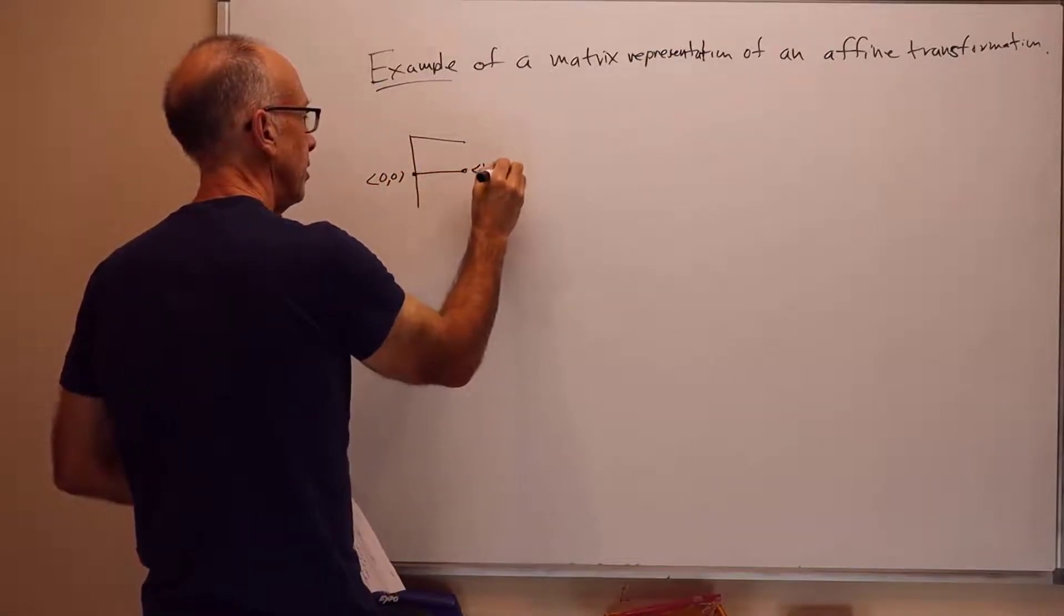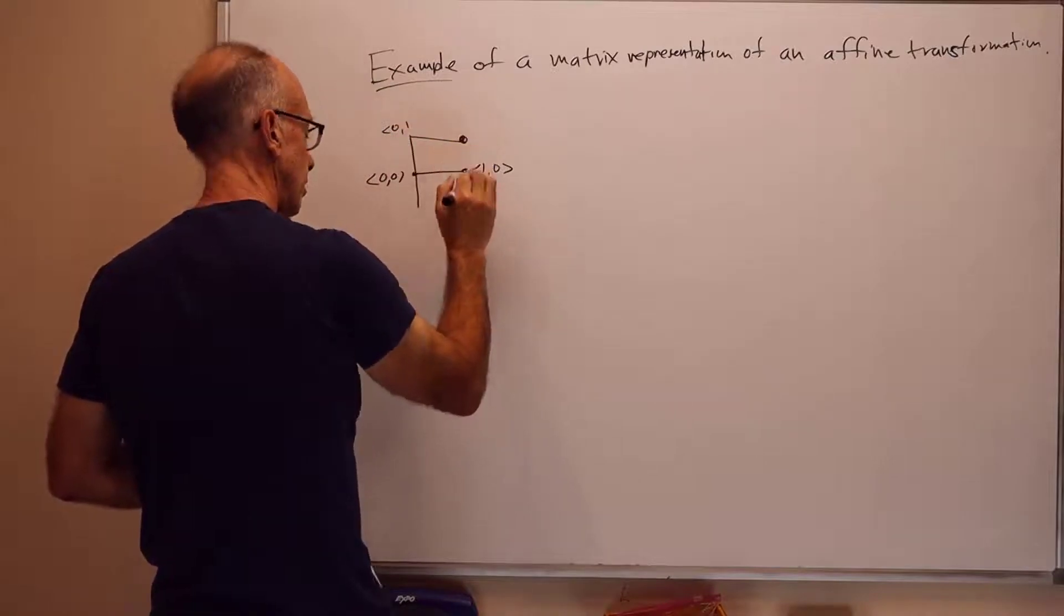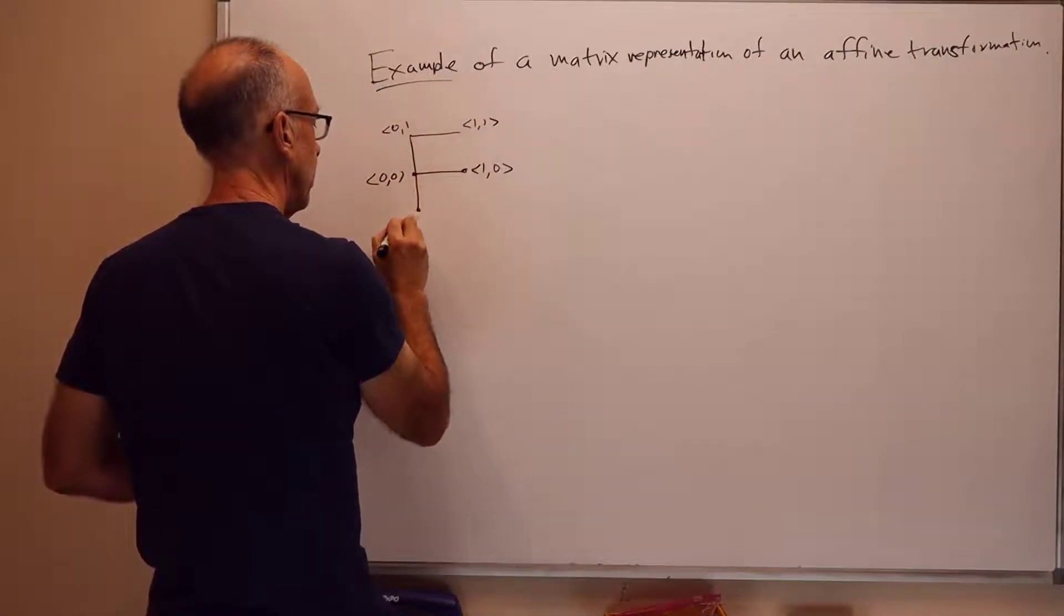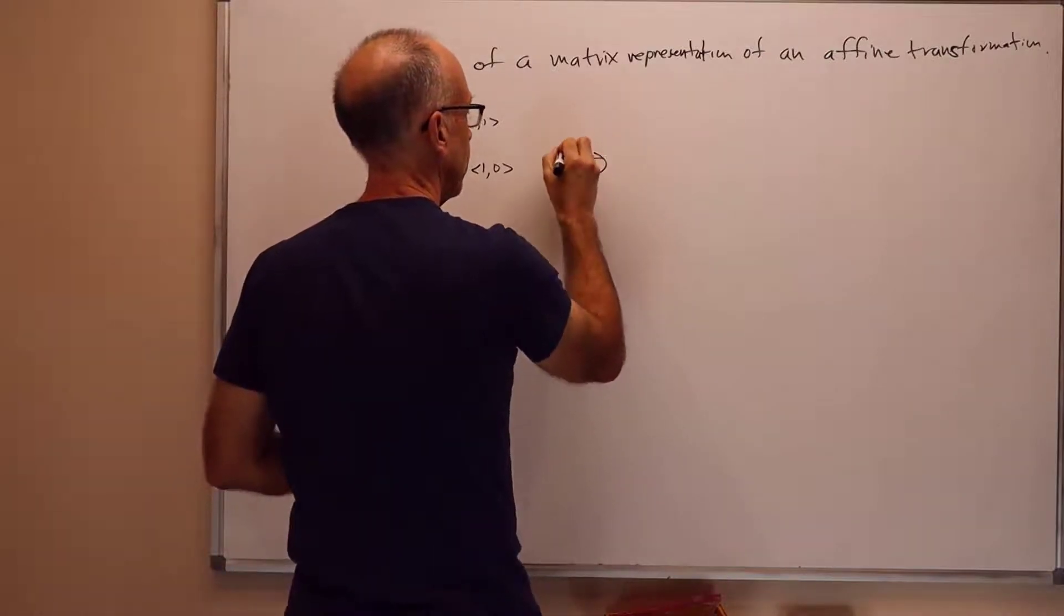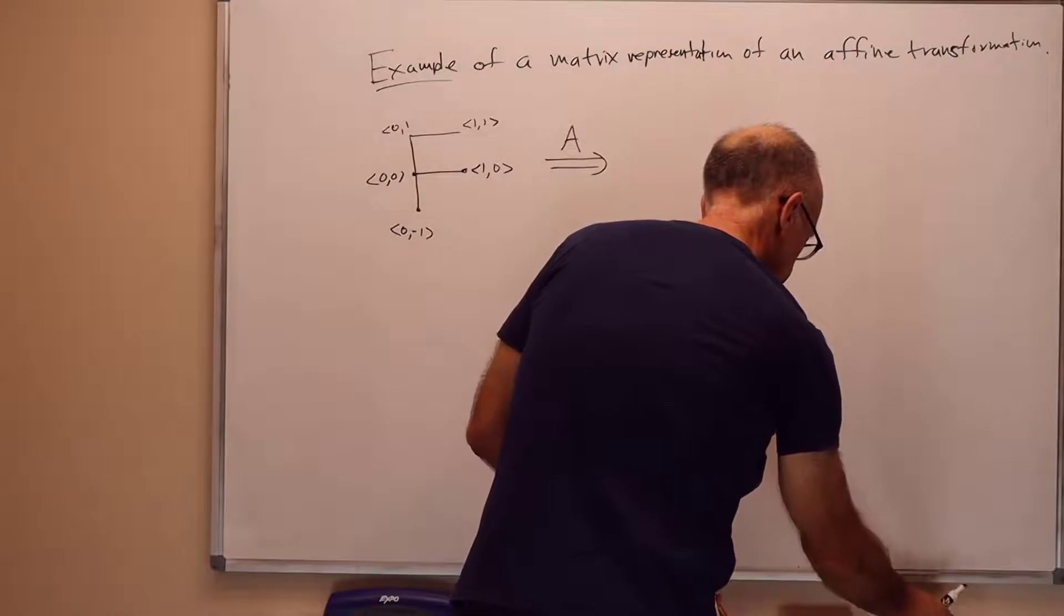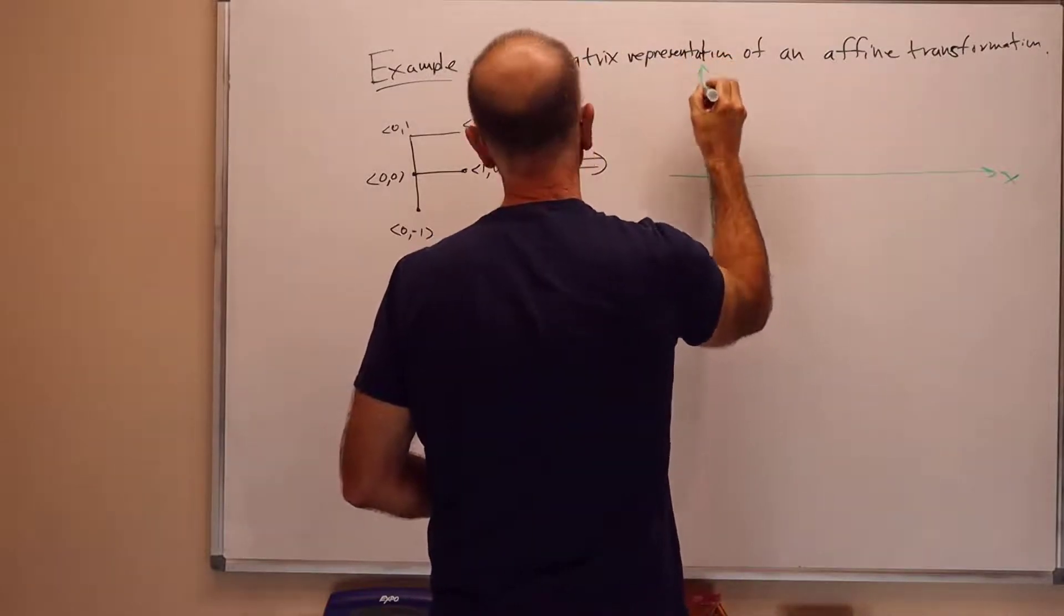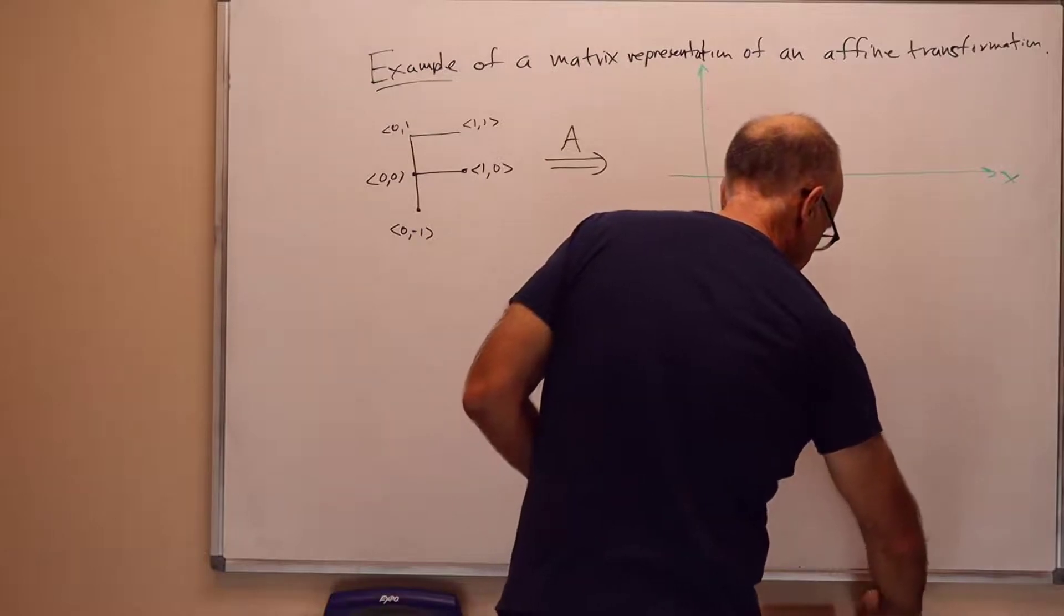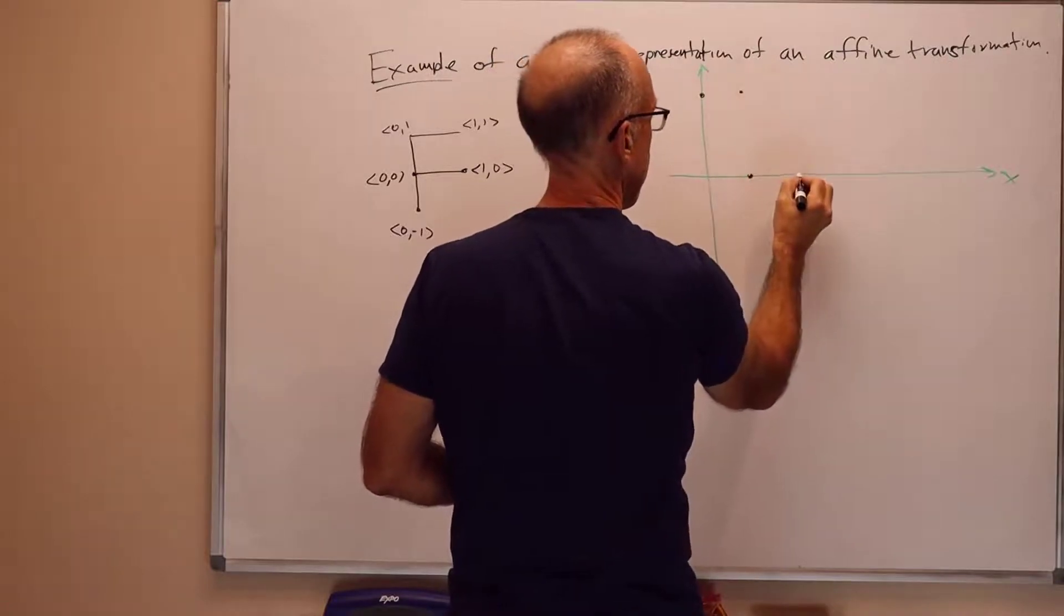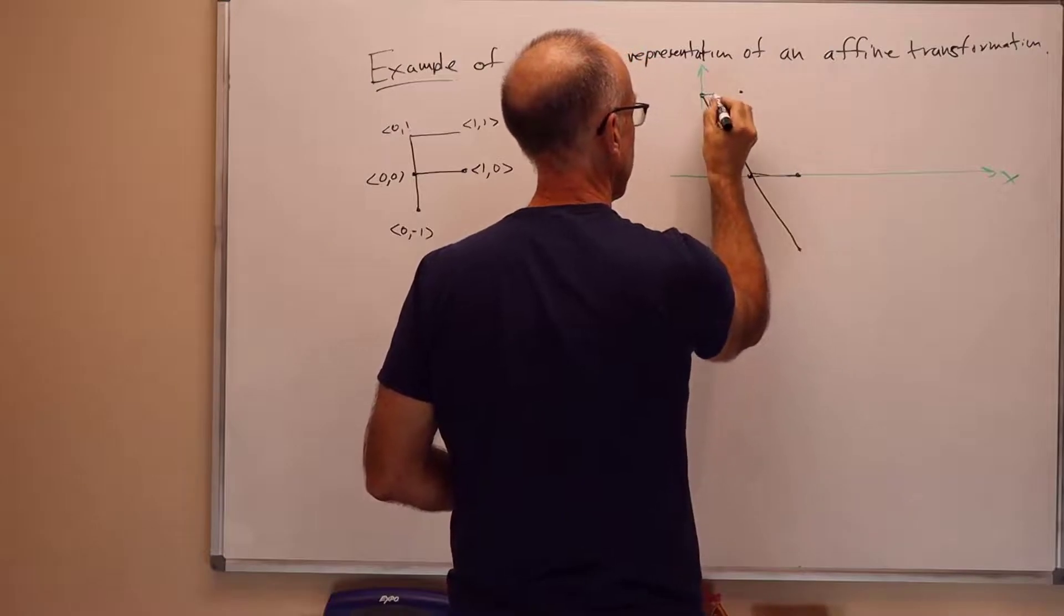And we'll do this in terms of the F shape, as we had before. So let's just consider the following mapping. So we'll take the F in standard configuration. So this is 0, 0 here, 1, 0 here, 0, 1 here, draw that a little better, 1, 1, and 0, -1.